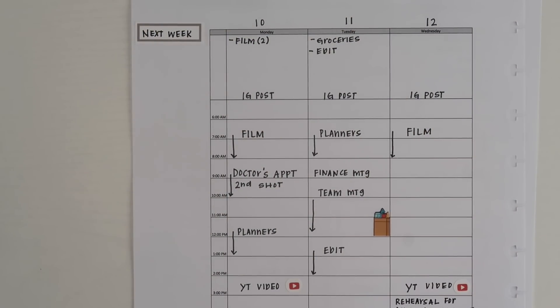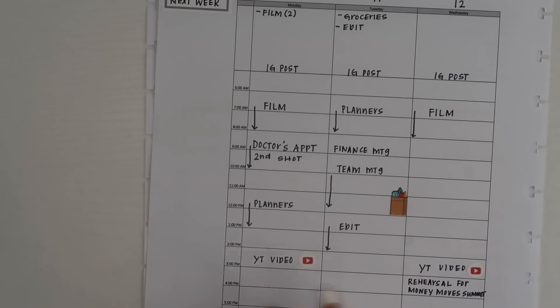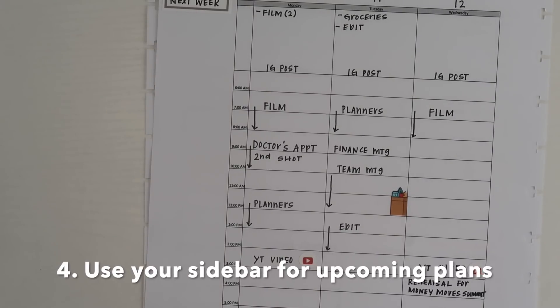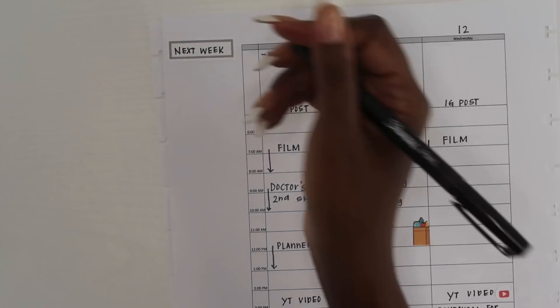My fourth tip is something that I've talked about before, but since I'm doing it right now I wanted to mention it again. That is to use your sidebar to keep track of your goals that you have for the current week and your plans for next week.